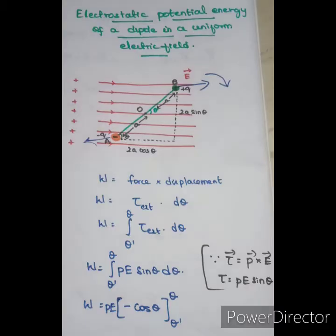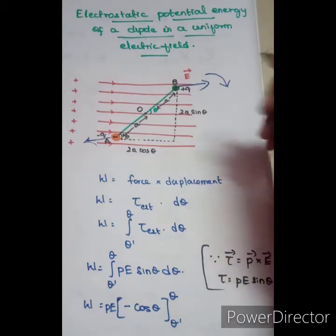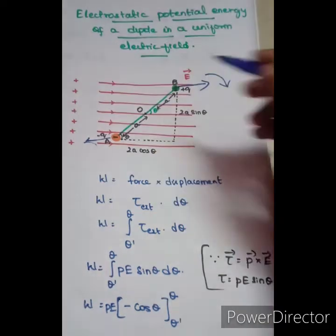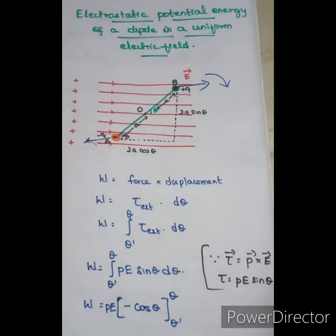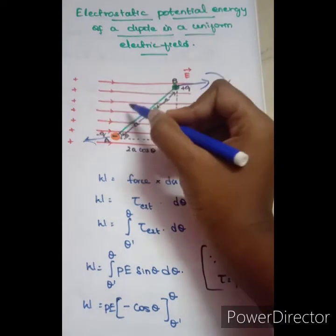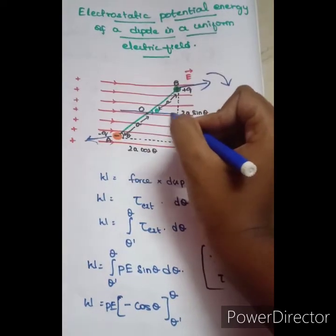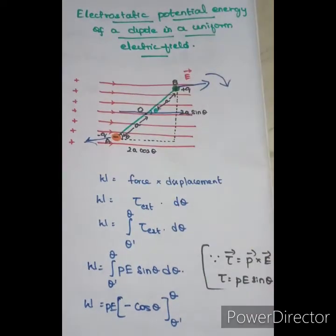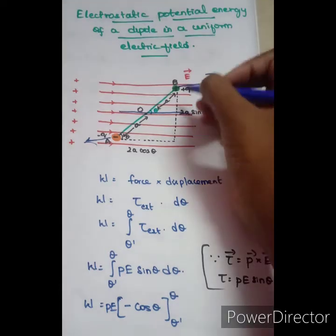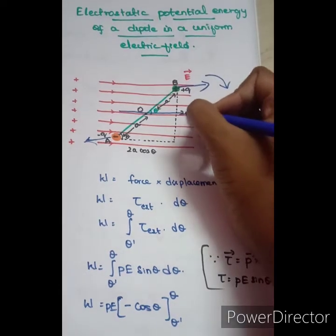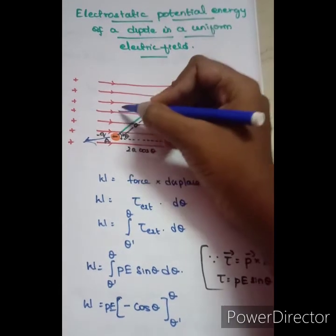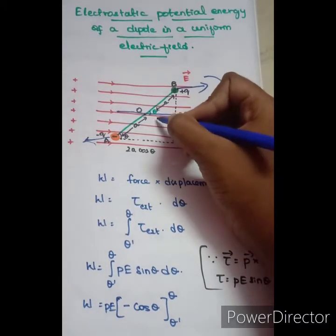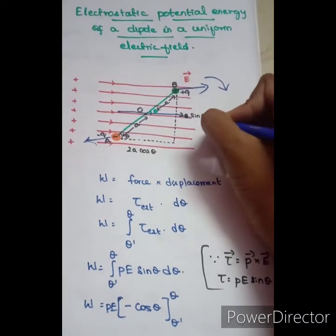Consider this: I am going to rotate this dipole in this direction. The dipole aligns with the electric field lines — it becomes parallel, it becomes aligned. So in this direction, the dipole makes an angle theta with the field.